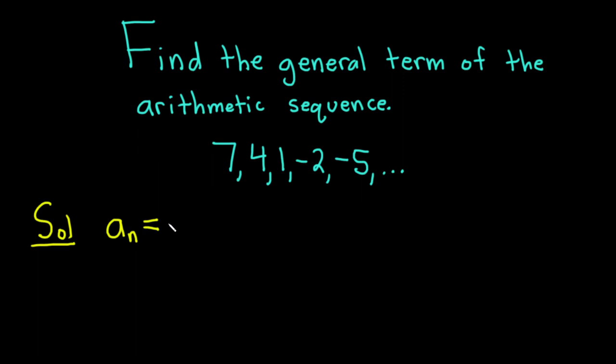And that's equal to the first term, so a sub 1, plus n minus 1 times d. So we have n minus 1 common differences. d is called the common difference, and a sub 1 is the first term. So we just have to find a sub 1 and d, and then n here is the variable.